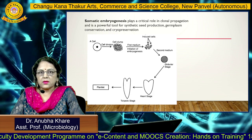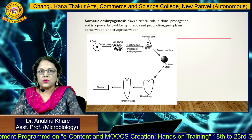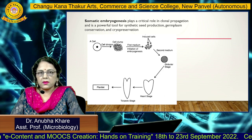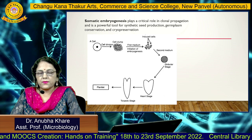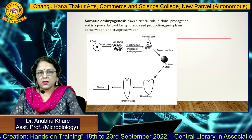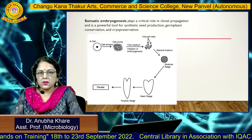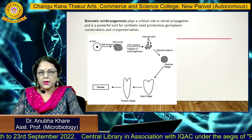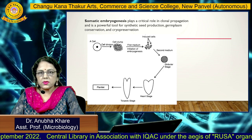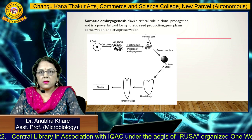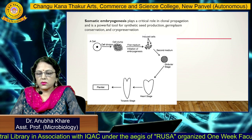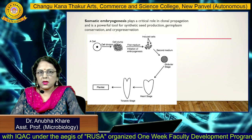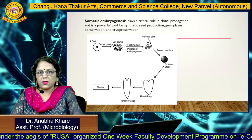This diagram illustrates somatic embryogenesis. Somatic embryogenesis means regeneration of a plant using vegetative cells, not reproductive cells like anther or pollen grains. We use somatic cells to develop a new plantlet, producing an embryo from a vegetative cell. It plays a critical role in clonal propagation and is a powerful tool for synthetic seed production, germplasm conservation, and cryopreservation.